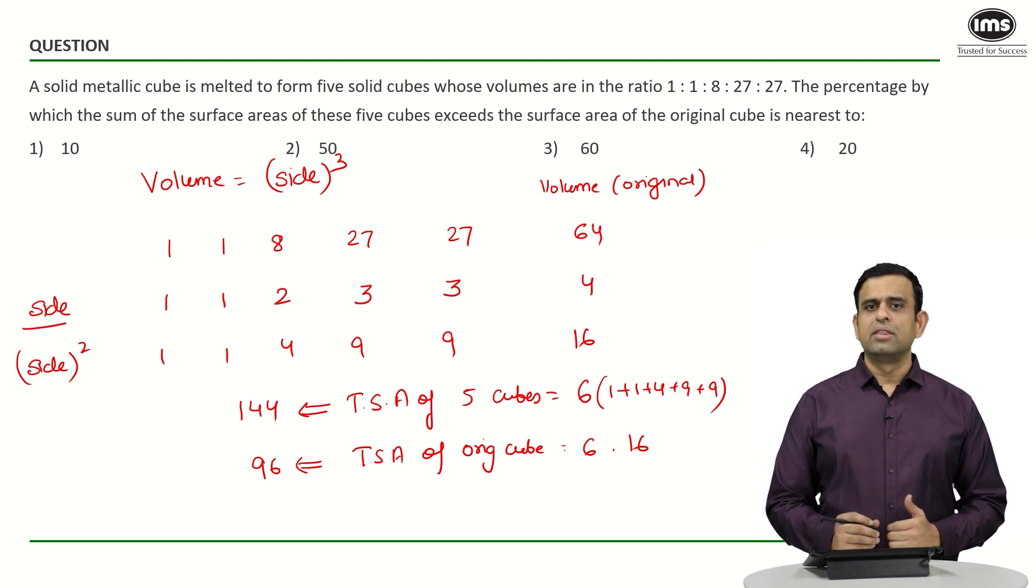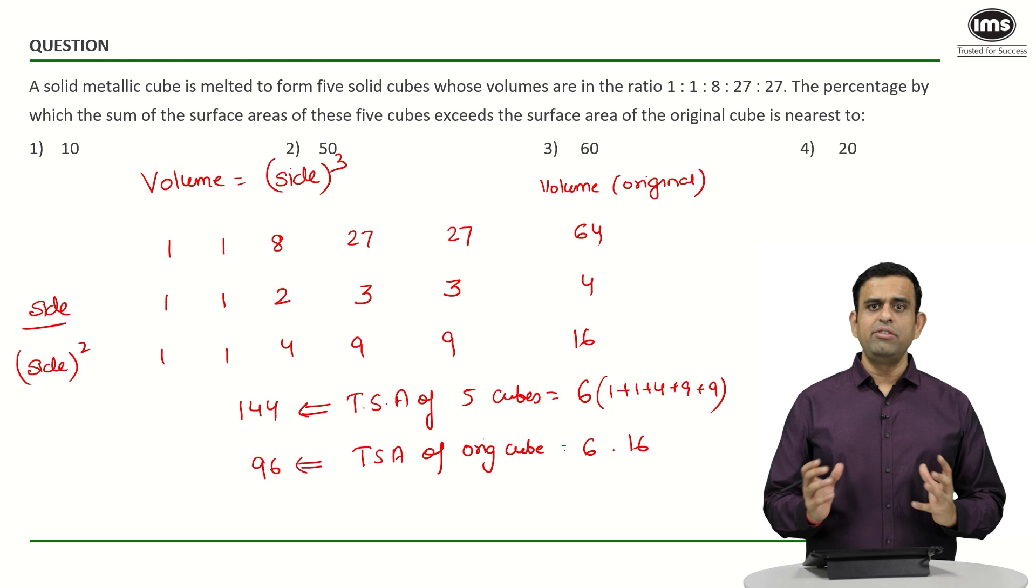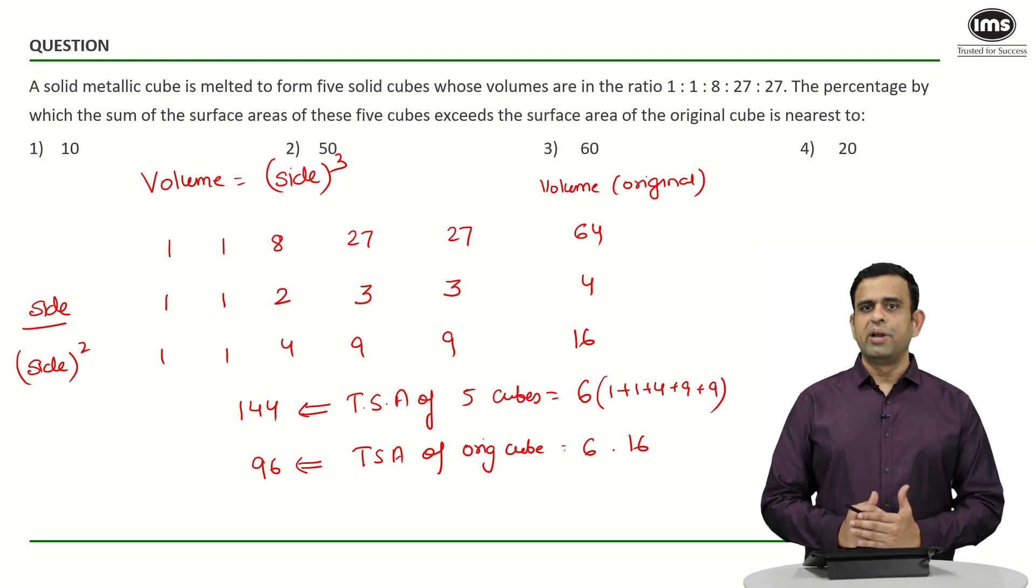The surface area of the original cube is 96 square centimeters, and the total surface area of all 5 cubes is 144 square centimeters.